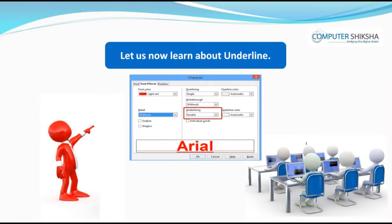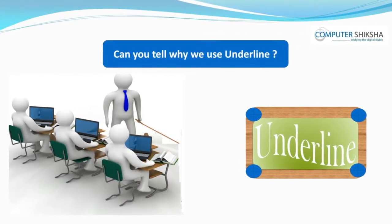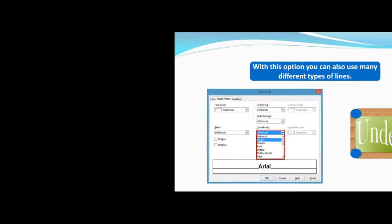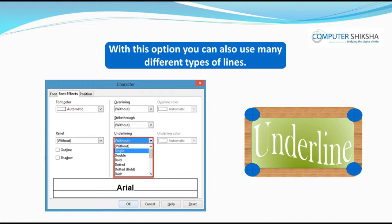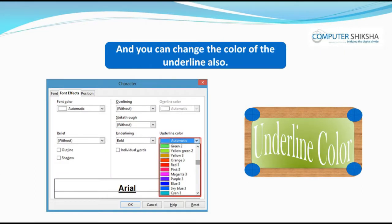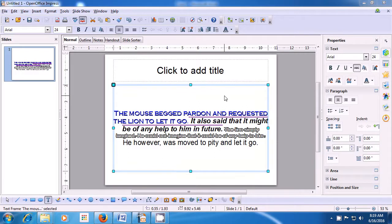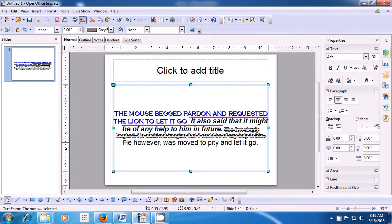Let us now learn about Underline. Can you tell why we use Underline? As you know, with Underline we can get a line below our text or paragraph. If you want to highlight a paragraph, you can do so by underlining it. With this option, you can also use many different types of lines and you can change the color of the underline also. Let us watch the video and learn more about Underlining. To be able to underline the text, first we need to select the line or the text that we want to underline. As is being shown in the video, we first select this text.